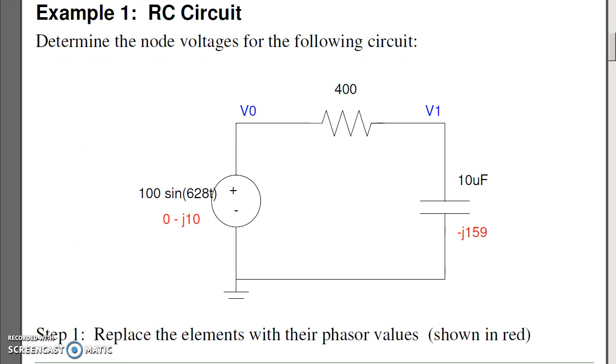If I have a circuit, I can analyze it just like we did at DC, except now the sum of the currents have to add to zero, where the currents are now complex numbers. For example, suppose I have the following circuit: a 100 volt, 100 hertz sine wave going to 400 ohms, 10 microfarads.